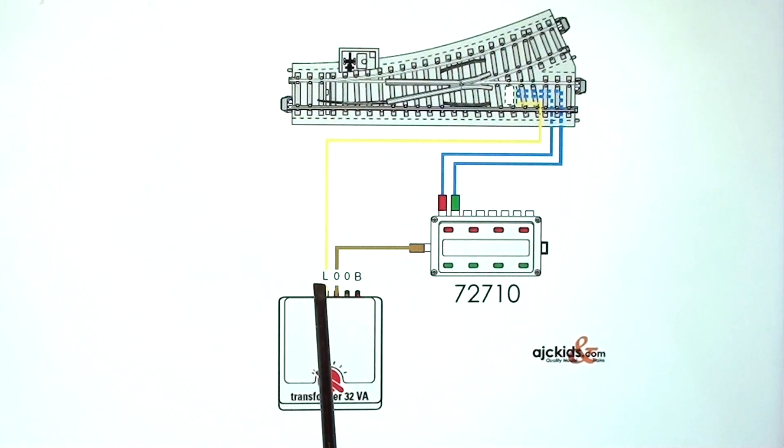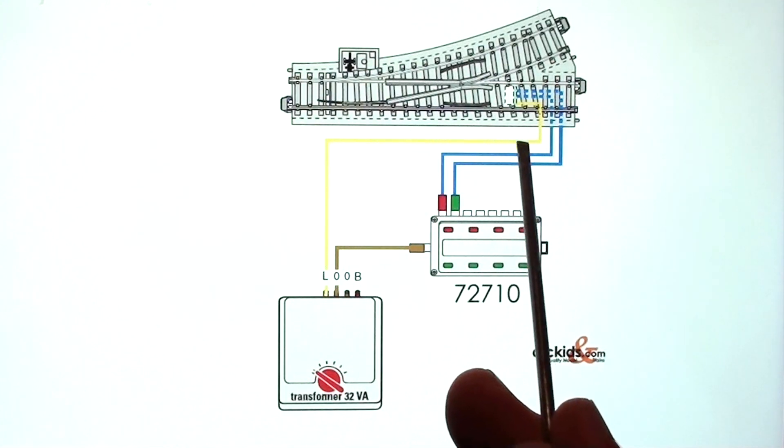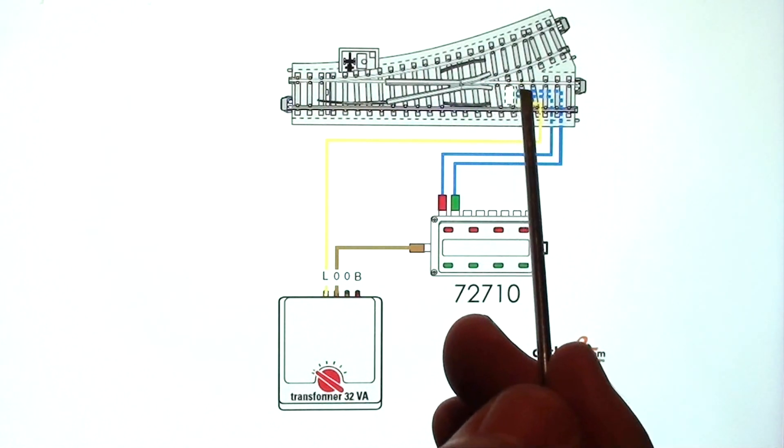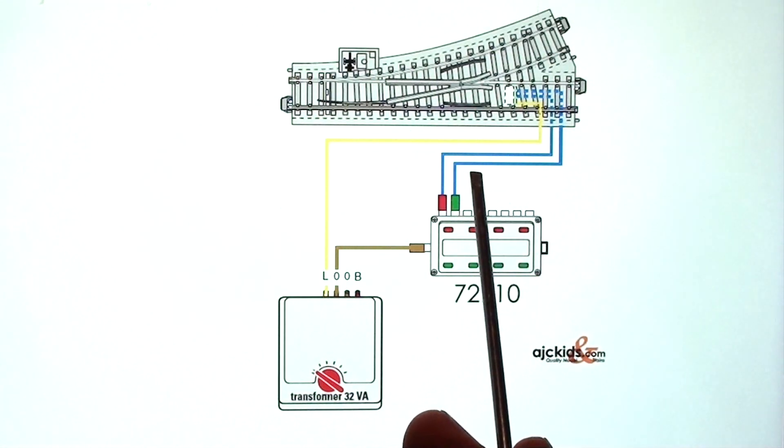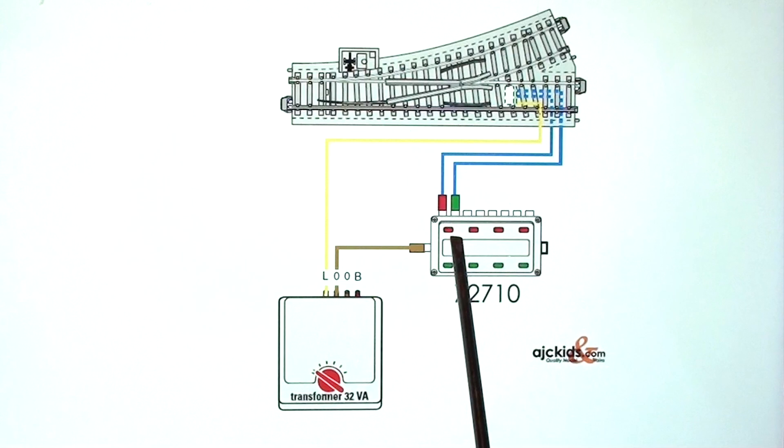If you push the green button, power will run through the yellow, through the magnet. And now it will go through the other wire, the wire with the green plug, through your control box, and through the brown back to the transformer. That's how the magnets get powered in the turnout.